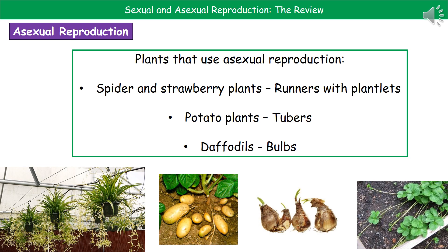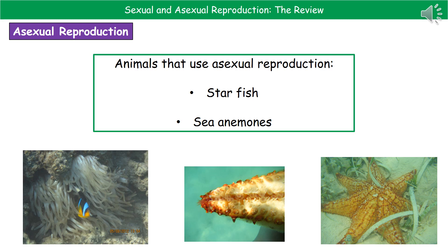Other examples of organisms that reproduce asexually include quite a few plants. Spider plants and strawberry plants reproduce by producing runners, and at the end of the runner you'll find a mini plant that is genetically identical to its parent. Potatoes reproduce via tubers, and daffodils use bulbs. Some animals also reproduce asexually — two key examples are starfish and sea anemones.